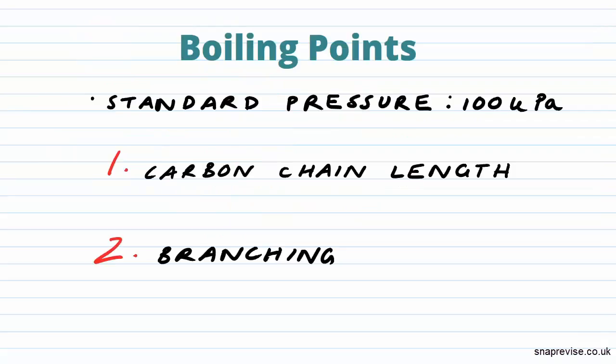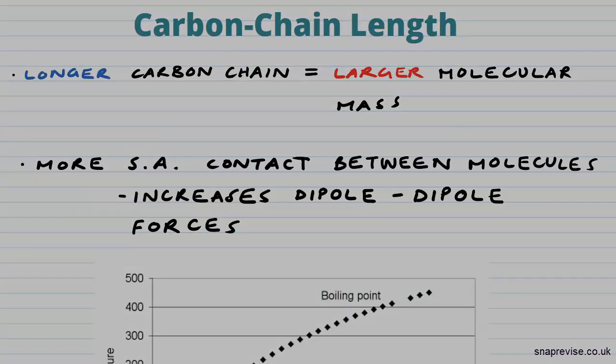Now let's have a look at the boiling points and trends in boiling points. Boiling points are measured at a standard pressure of 100 kilopascals. There are two major factors that influence the boiling points of alkanes: the first being carbon chain length, and the second being branching.